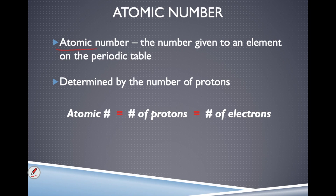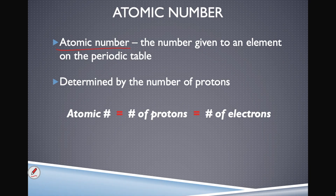The atomic number is the number given to an element on the periodic table. For example, hydrogen has an atomic number of one, written in the top left corner of its entry. Lithium has an atomic number of three, and sodium has an atomic number of 11. These numbers were not arbitrarily assigned — hydrogen isn't number one because it was the first element discovered.